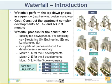In waterfall, everything is top down. It flows from the top to the bottom — a very obvious one-after-the-other approach. The top-down phases are conducted in sequence. So let's say the goal is to construct an apartment complex: developments A1, A2, and A3. I'm going to call these three my apartment complex units or developments — also called phases. So I have three high-rise apartment buildings that I need to construct.